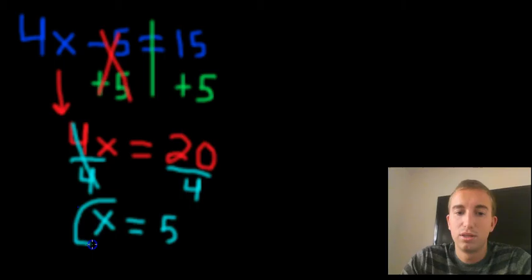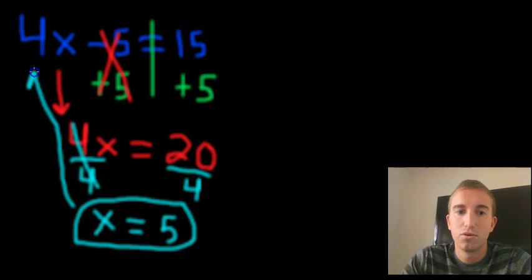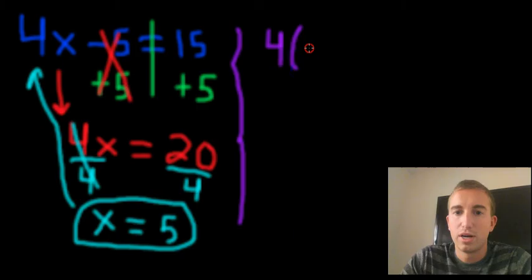Again, this looks good to me, but let's double check our answer by plugging x back into the equation. So over here, I'm going to rewrite this one more time and just plug in x for 5. So 4, again, times x is now going to be times 5 minus 5 will equal 15.